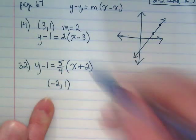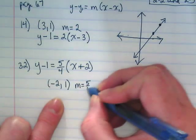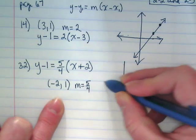What's our slope here? M equals 5 over 4. So let's make a quick sketch of a graph.